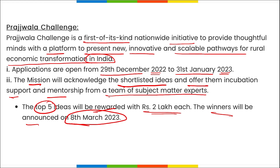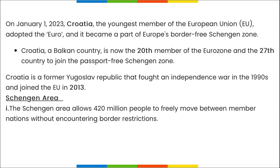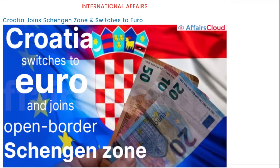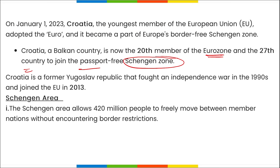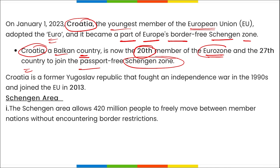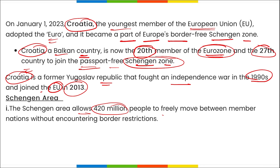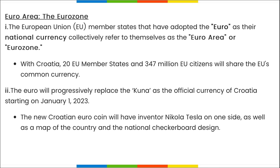Croatia became the 20th member of the Eurozone and the 27th country to join the passport-free Schengen Zone. Croatia, the youngest member of the European Union, adopted the euro and became part of Europe's border-free Schengen Zone. Croatia, a Balkan country and former Yugoslav republic that fought an independence war in the 1990s, joined the EU in 2013. The Schengen Area allows 420 million people to freely move between member nations without encountering border restrictions.